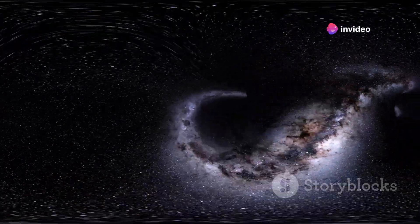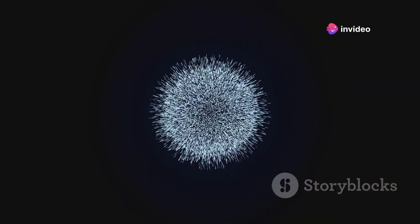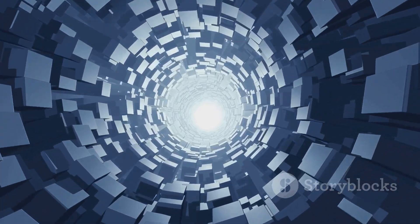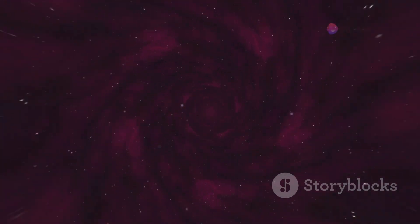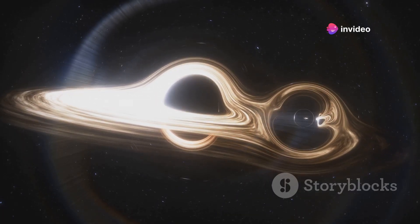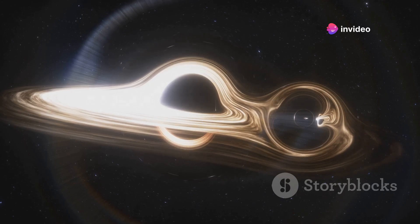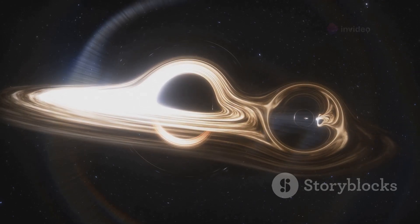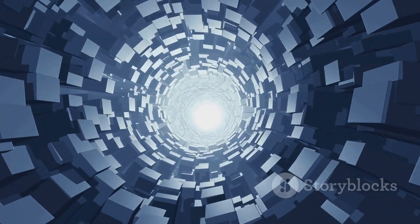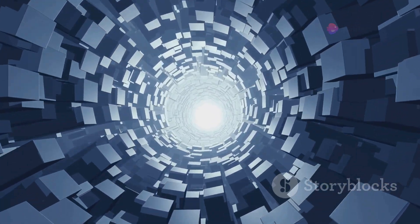Visualizing a wormhole can be a challenge, as it involves imagining dimensions beyond our everyday experience. One way to picture it is to imagine a two-dimensional universe, like a flat sheet of paper. A wormhole would appear as a circle on this sheet, connecting to another circle elsewhere on the same sheet, or even a different sheet altogether. In our three-dimensional universe, a wormhole would be a sphere-like object, connecting two distant points in space.